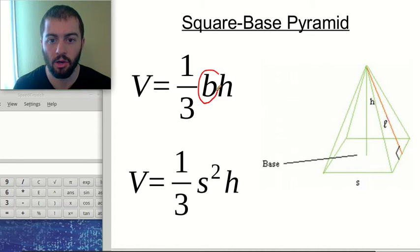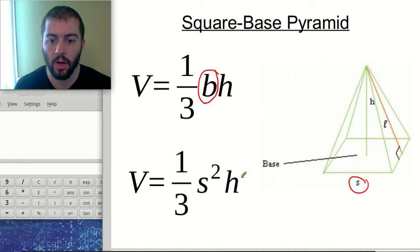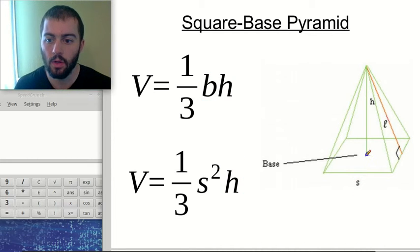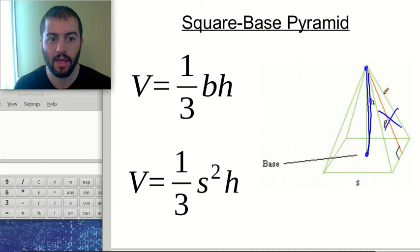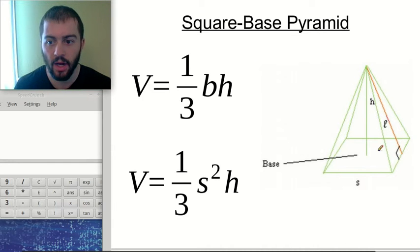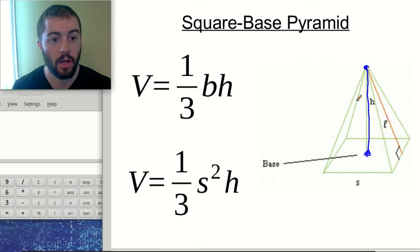One-third base times height if you're given the area of the base, or one-third side squared times height if you're given a side length of the square base. An important thing to note: when using the height in this formula, the height is not along the side of the pyramid. The height goes from the center of the base straight up to the apex. This blue line is the height; the red line along the side is not the height — that's an altitude for one of the triangle sides, used for surface area.